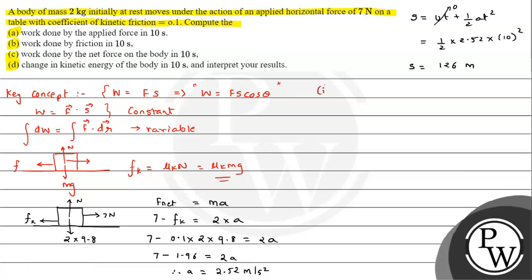For Part A, we calculate work done by the applied force. Since the applied force of 7 N is in the direction of displacement, θ = 0 so cosθ = 1, giving W = F × s = 7 × 126 = 882 joules. This is the work done by the applied force of 7 N in 10 seconds.